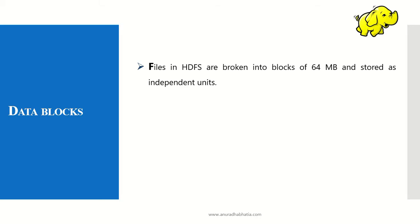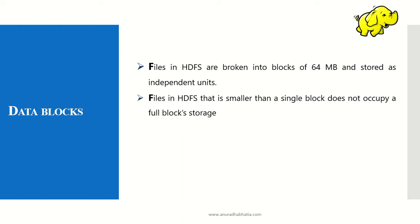Files in HDFS are broken into blocks of 64 MB — that is the default size — and are stored as independent units. Whenever data is flowing into an HDFS file system, it is divided or broken down into a block of 64 MB only.